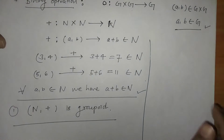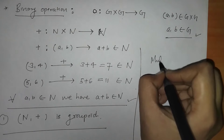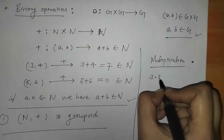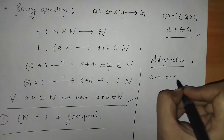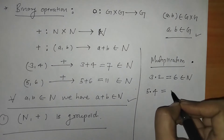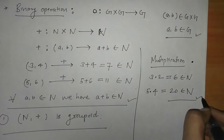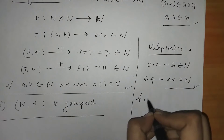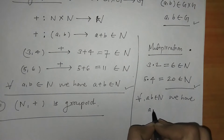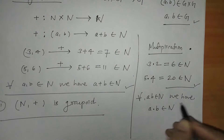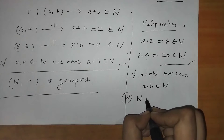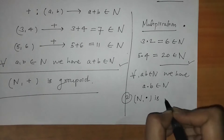In the same manner, if we take the operation multiplication, if we have 3 and 2 and multiply them, we get 6, which is again a natural number. If we have 5 multiplied by 4, we get 20, and 20 belongs to N. That means for all a, b belonging to N, we have a multiplied by b belonging to N. So we say that the algebraic structure N with multiplication is a groupoid.